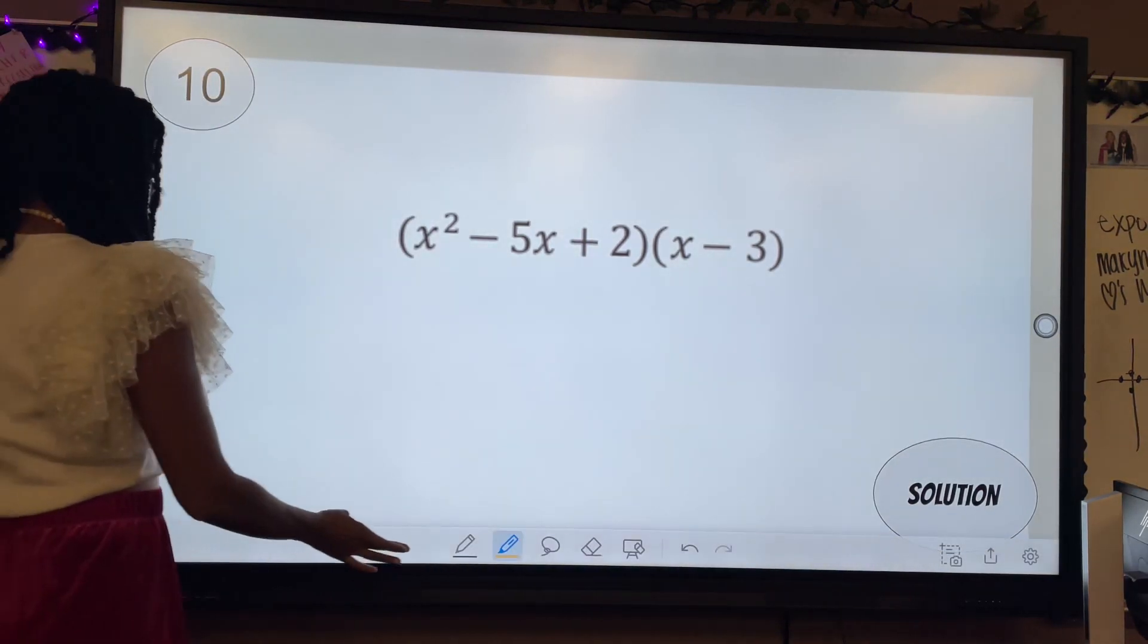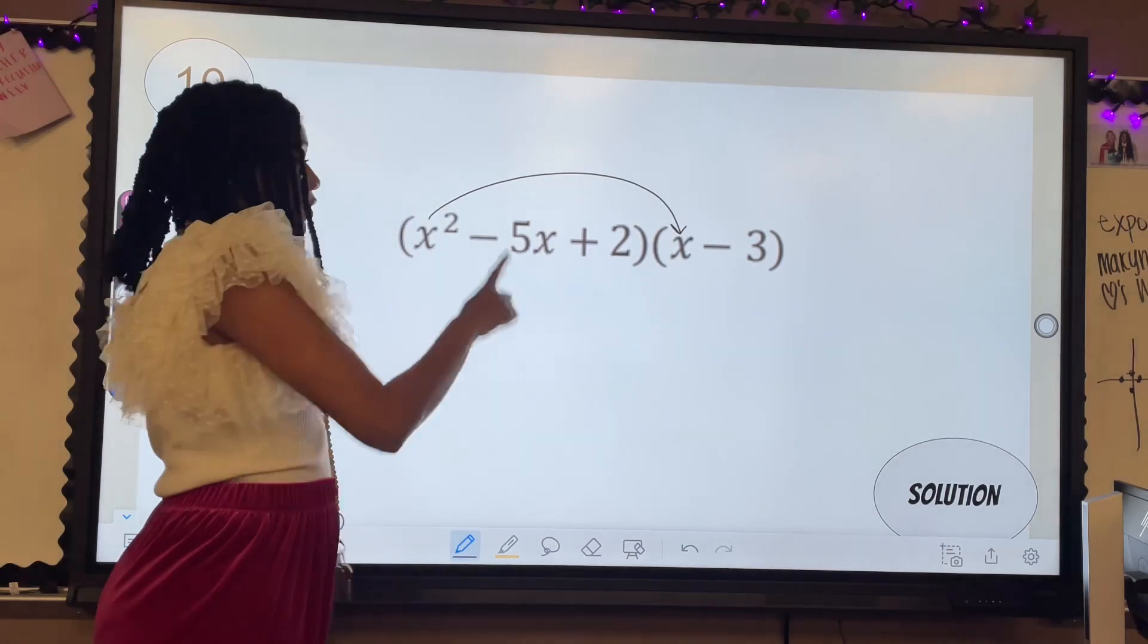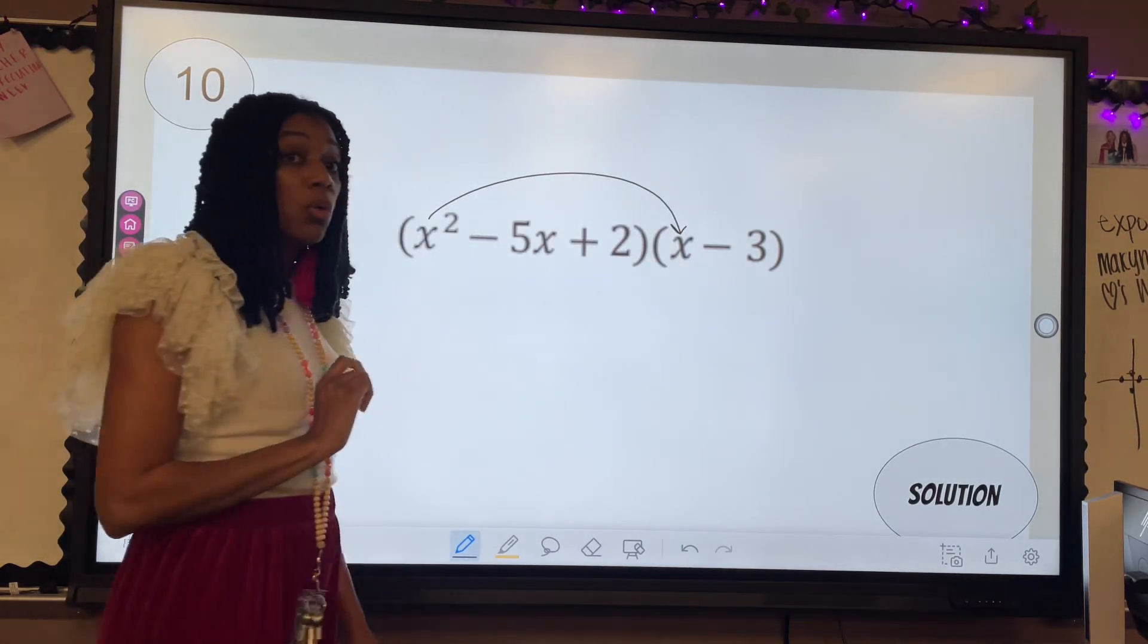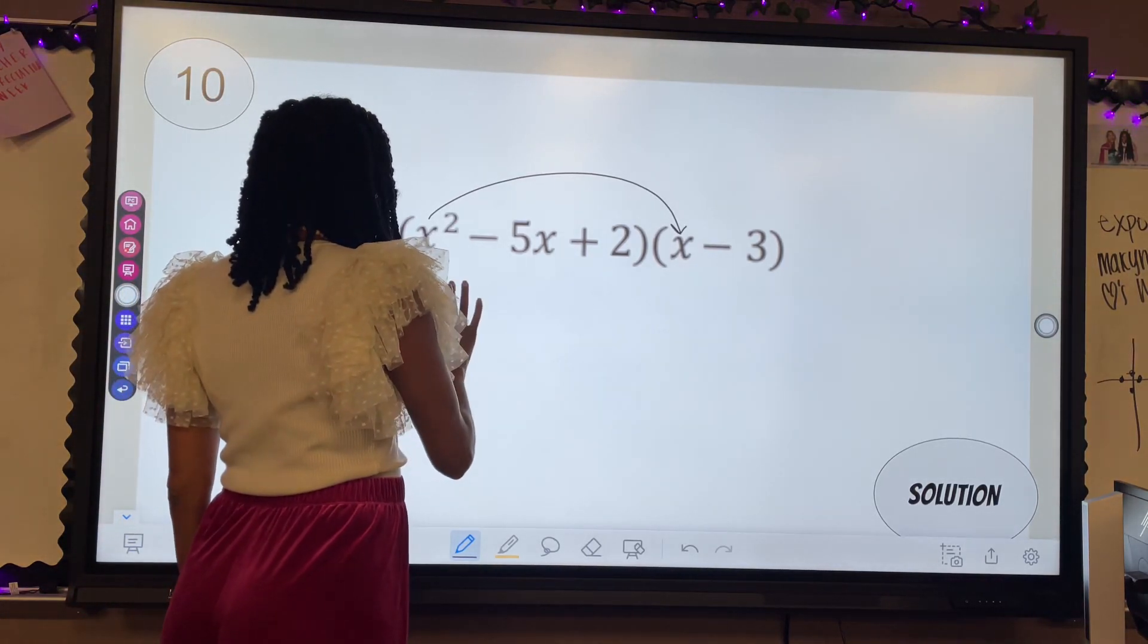I would do x squared times x. This one has two, this one has one, that is a total of three x's, but it becomes x to the third power.